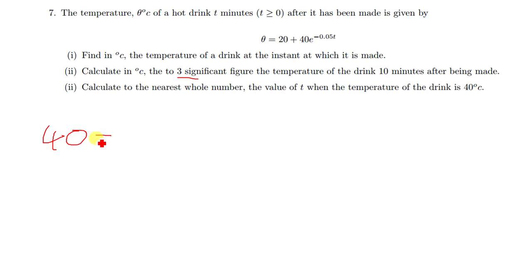When the temperature is 40, meaning where this θ we put 40. We say 40 = 20 + 40e^(-0.05t). We're trying to find t. How do we do that? We take this 20 to the other side of the equal sign to be 40 minus 20, then I'll get 20 = 40e^(-0.05t).